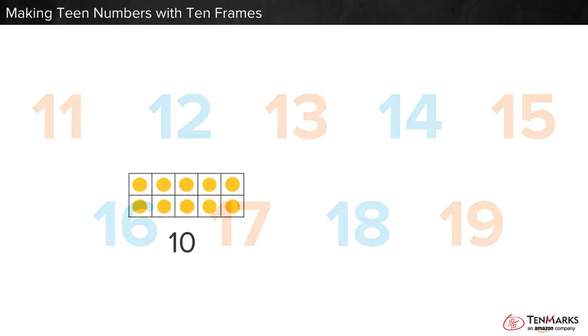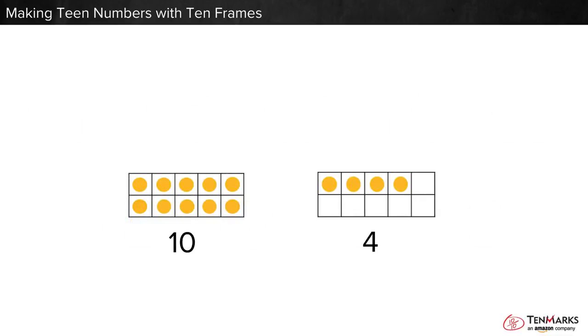10 ones and 4 more ones makes 14. To show 14, we write 1 to show the 10 ones, then 4 to show the 4 ones. This number is 14.